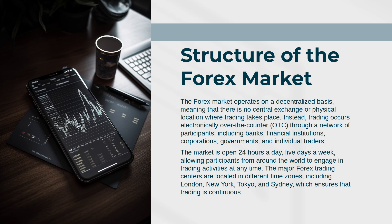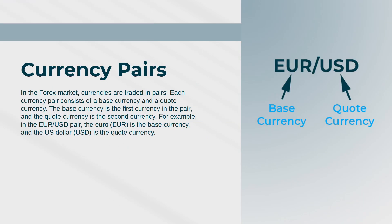The major forex trading centers are located in different time zones, including London, New York, Tokyo, and Sydney, which ensures that trading is continuous. Currency pairs: in the forex market, currencies are traded in pairs. Each currency pair consists of a base currency and a quote currency. The base currency is the first currency in the pair and the quote currency is the second. For example, in the EUR/USD pair, the euro is the base currency and the U.S. dollar is the quote currency.